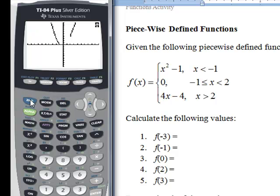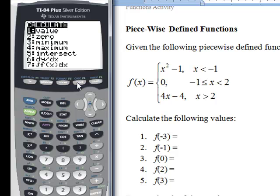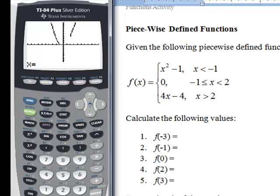Now, what we can do to calculate those values, now we're down to the second part. They asked us for f of negative 3. That's the output when x equals negative 3. So you do second, calculate, value, negative 3, enter, and you get 8.